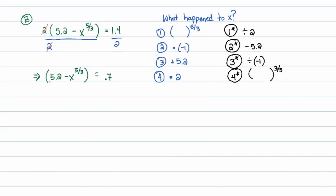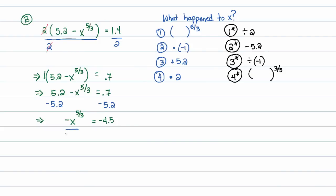Next I subtract 5.2 from both sides. The 5.2 on the left cancels, leaving negative x to the 5/3. The right-hand side becomes negative 4.5. Then I divide both sides by negative 1 — which is the same as multiplying by negative 1. The negatives on the left-hand side cancel, giving me x to the 5/3 equals 4.5.